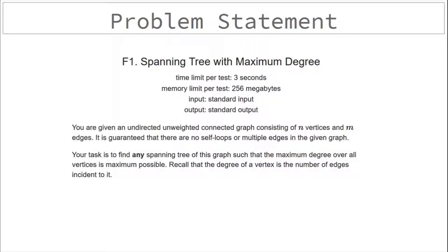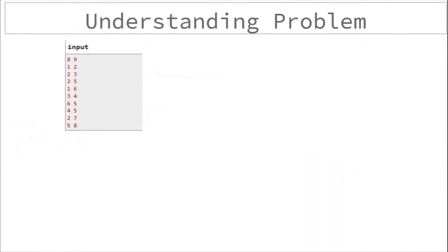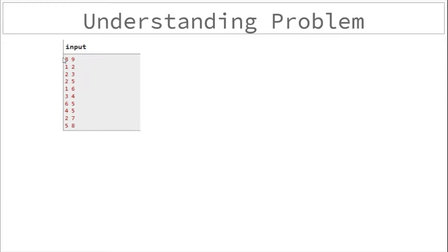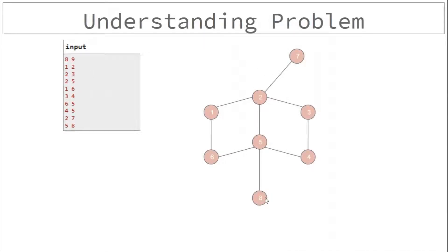Basically, you have to print a spanning tree which maximizes the degree of a node. In the example input, there are eight nodes with nine edges — one is connected to two, two is connected to three, and so on. This is the graphical representation of the input. There can be more than one spanning tree, but we have to print the one in which a node has the maximum degree.